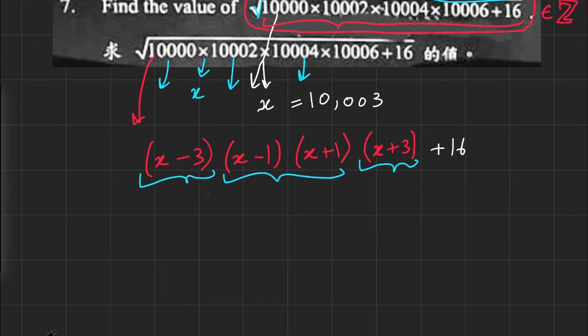Well, multiplying the (x-3) with the (x+3), that's x² - 9. Multiplying the (x-1) with the (x+1), that's x² - 1, plus 16. So if I do try to expand this, that would be x⁴ - 9x² - x² (that's -10x²), and that's +9 + 16, that's +25.